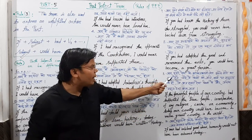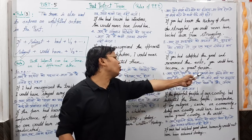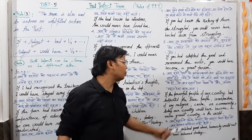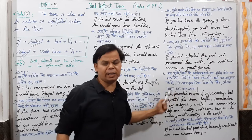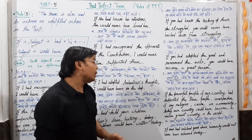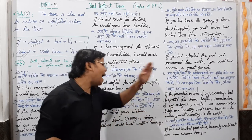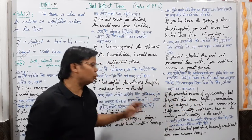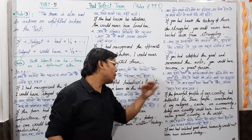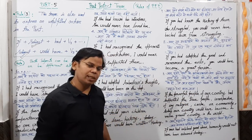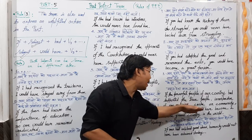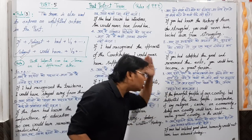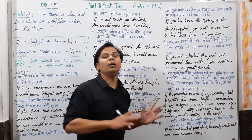Next example: अगर हमारे देश के शक्तिशाली लोग सच्छे लोगों का साथ देते, चाहे वे किसी भी जाति, धर्म या समुदाय के हों, तो आज हमारा देश विश्व में और अधिक महान देश बन जाता। English में: if the powerful people of our country had supported the true people, irrespective of any religion, caste or community, today our country would have become a more great country in the world।